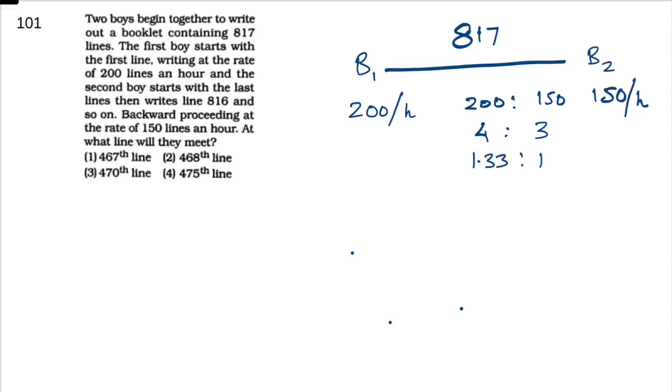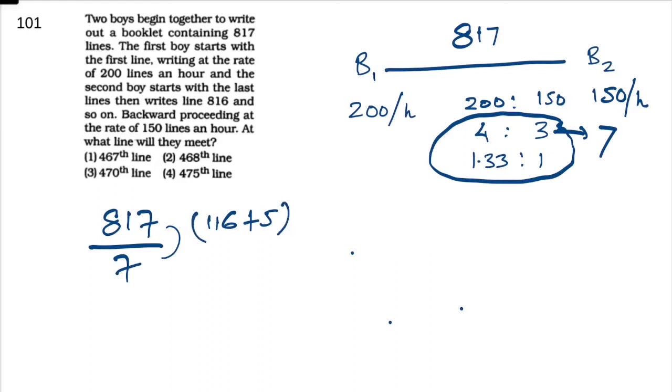This 1.33 is very important. If we combine, per unit time we can do 7. So the total work done is 817. We divide by 7, which gives us 116 plus 5/7, that implies 116 unit time. Then 116 times 4 implies 464 pages.